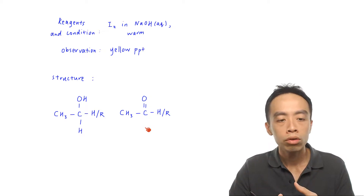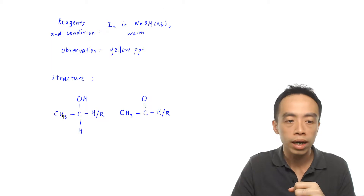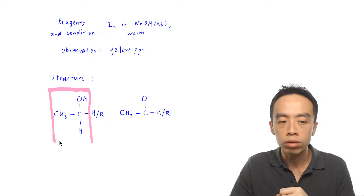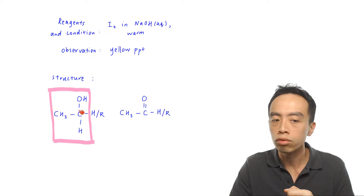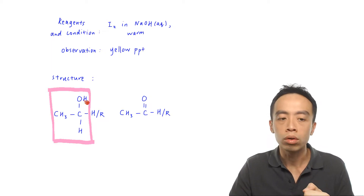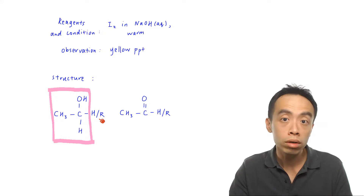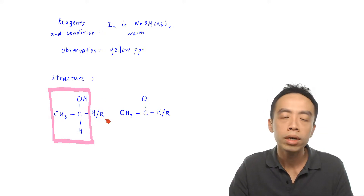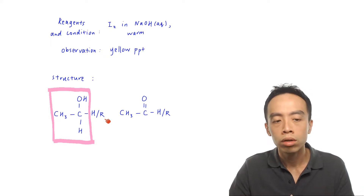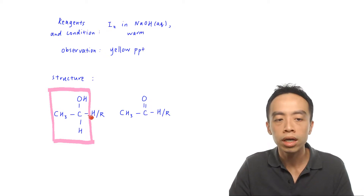The triiodomethane test targets a very specific structure. Highlighting these two carbons inside the pink box: one carbon must be a methyl carbon — a CH₃ — and the other carbon, which carries the alcohol group, must have an OH group and a hydrogen. The group outside this box must be a hydrogen or an R group; it cannot be some other functional group. So the specific alcohol that gives a positive triiodomethane test must be CH₃–CHOH, attached to a H or an R group.